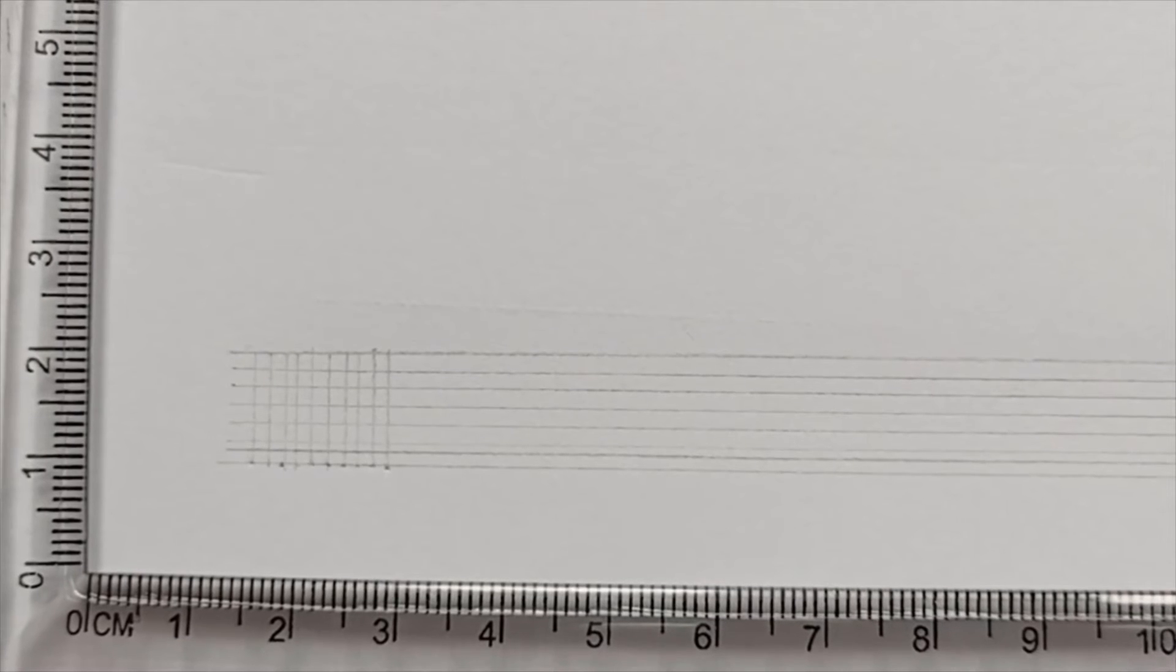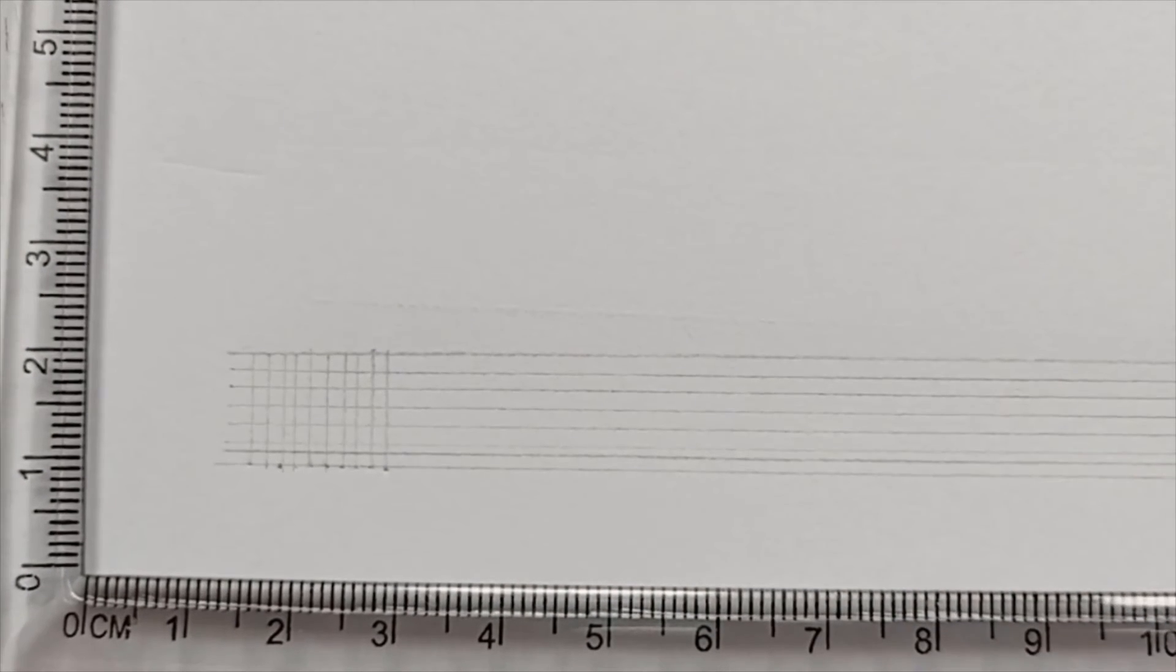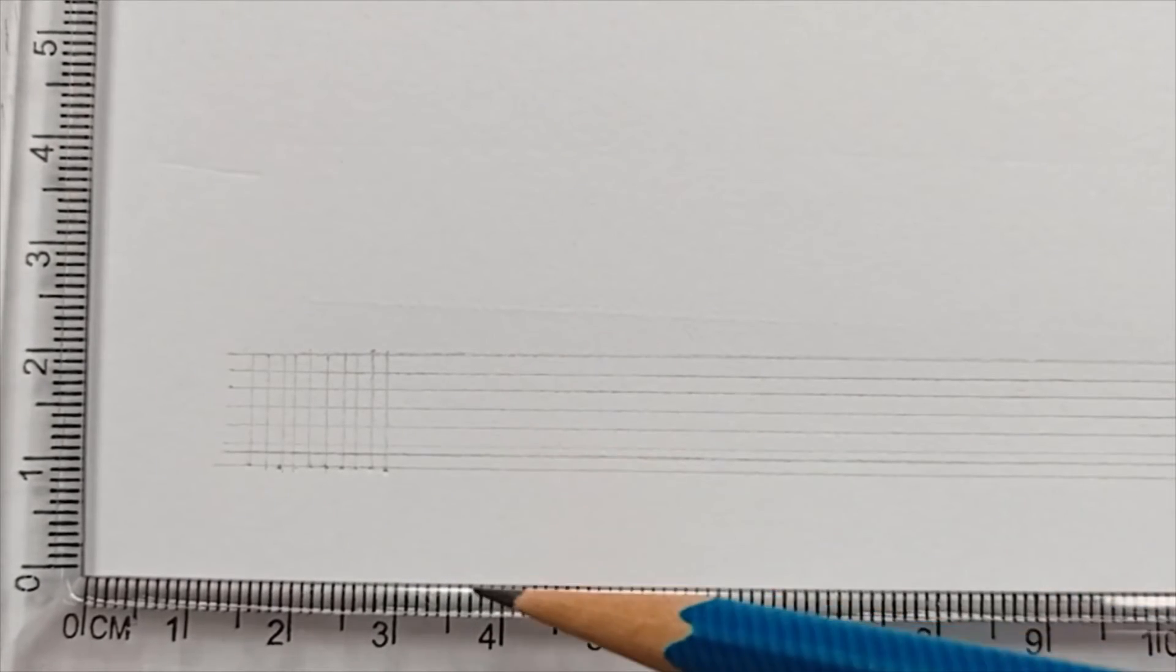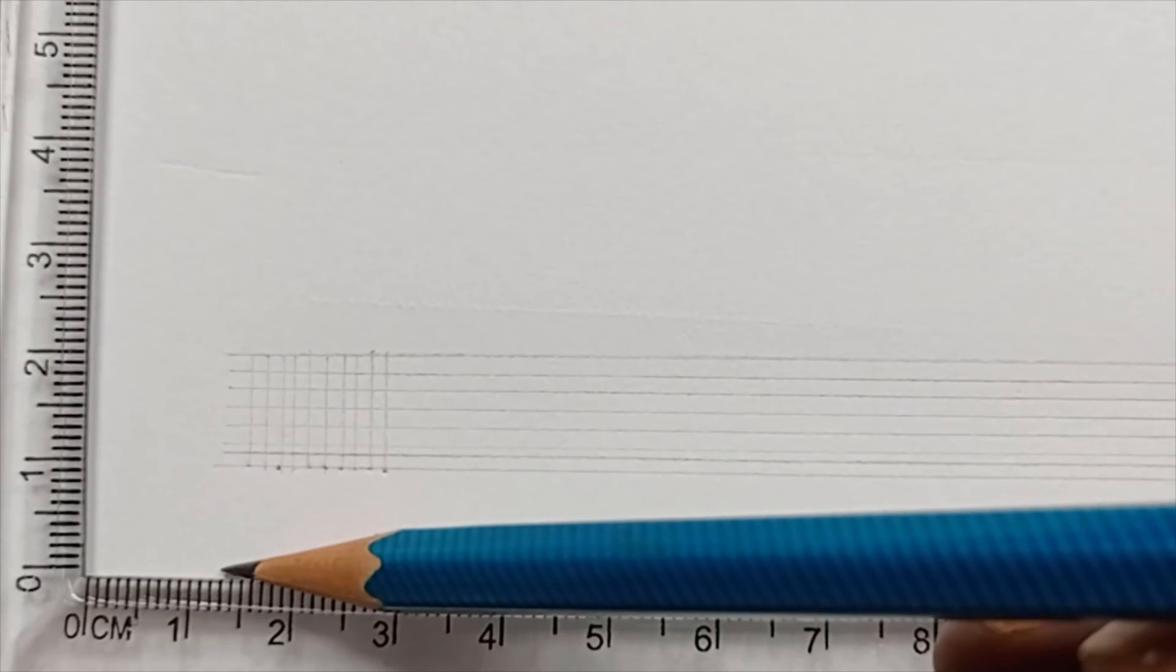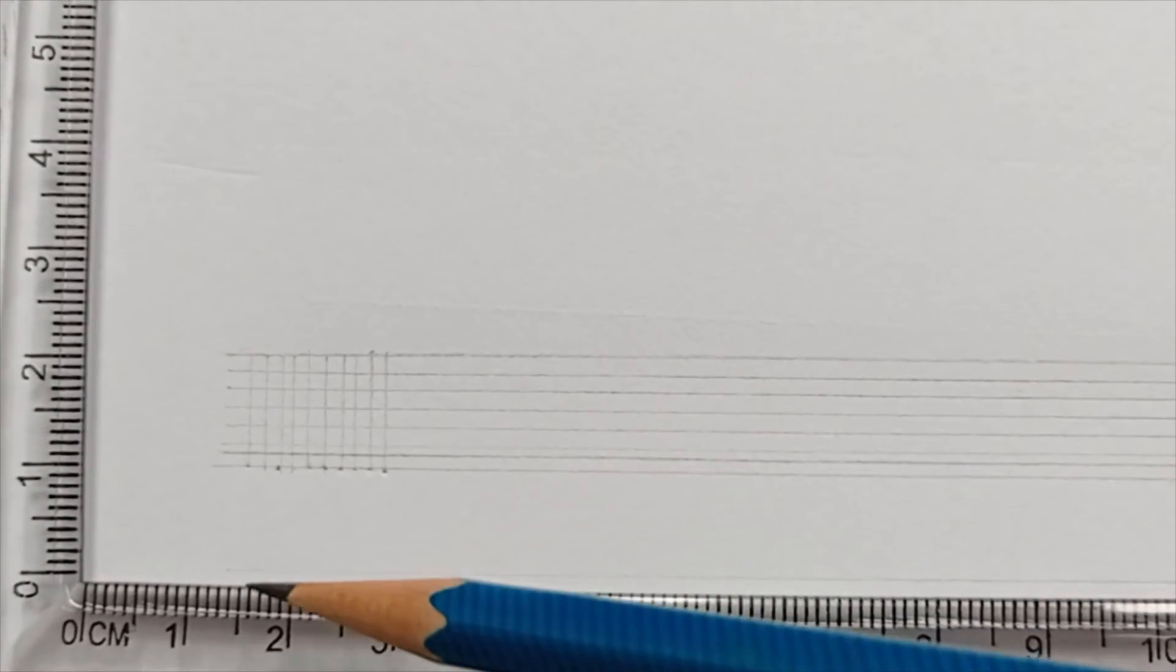The major advantage of using mini drafter is it can produce parallel lines both in horizontal and vertical direction. What you can do for the second line, if required, you can directly start with the next line again with the division of 1.5 each.